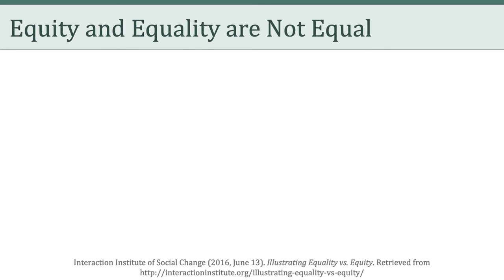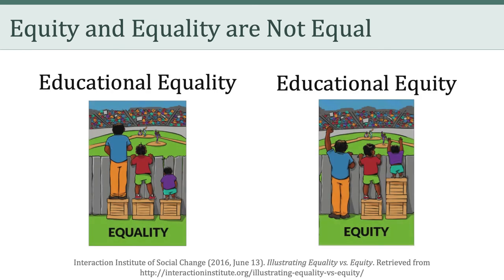Now it's time to talk about equity and equality, and the idea that equity and equality are not actually equal. Let's make a distinction between educational equality and educational equity. Equality, as shown on the left, aims to ensure that everyone gets the same things in order to enjoy full, healthy lives. Educational equity, in contrast, involves trying to understand and give people what they need to enjoy full, healthy lives. On the left, everybody gets the same resources — the educational resources are equal. On the right, the educational resources are distributed differentially based on the needs of the individuals.